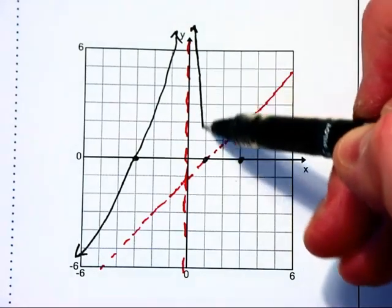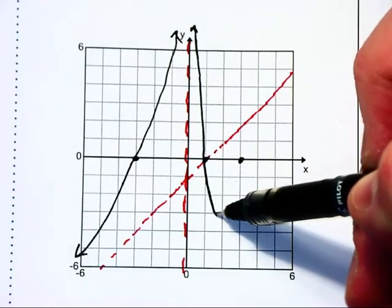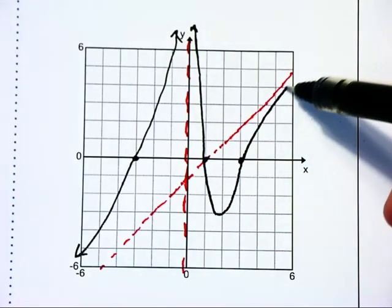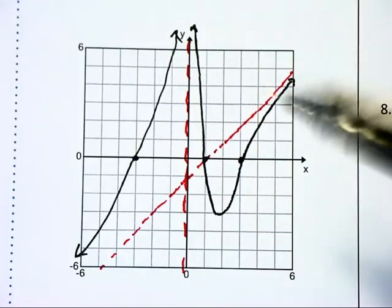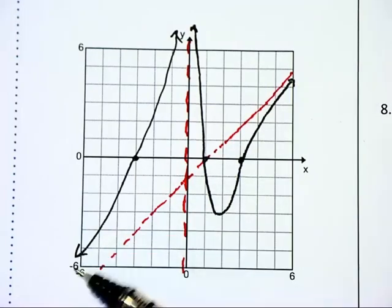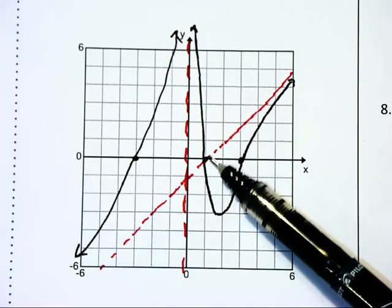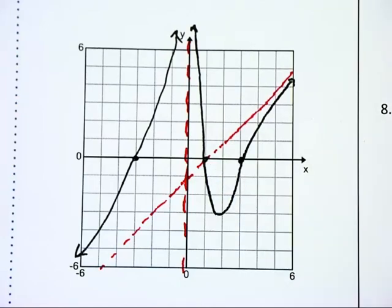So my graph is going to come down, cross through, turn around at some point, and come on up, and then hug that asymptote over on the right. Because on the far left and the far right, we always hug our asymptotes. We can cross a horizontal or a slant asymptote in the center of our graph if we need to.